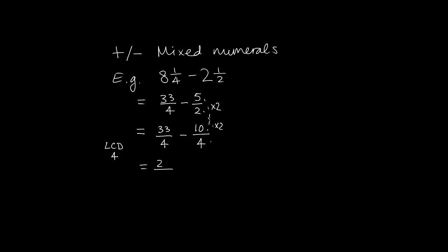That's quite easy. That's 23 over 4 as your answer in terms of an improper fraction. And if you wanted to then give it as a mixed numeral, 4 goes into 23 five times with a remainder of 3. And that's your answer in a mixed numeral format.